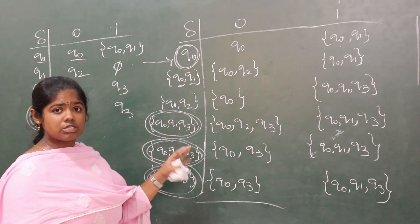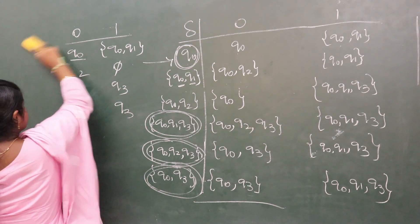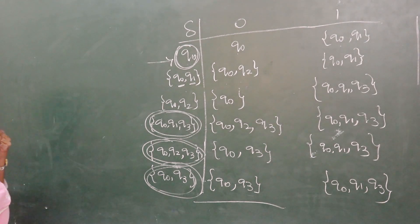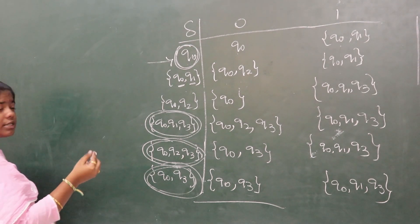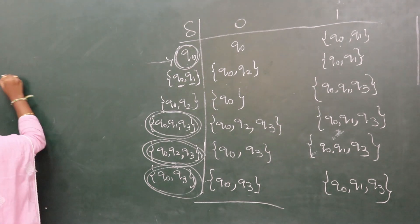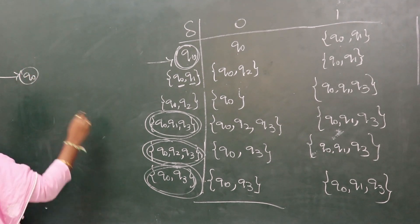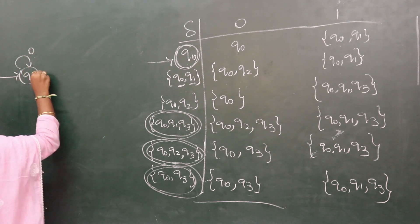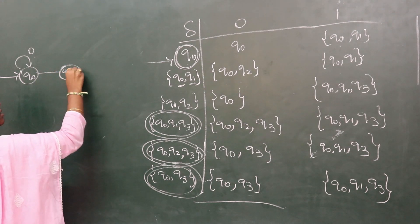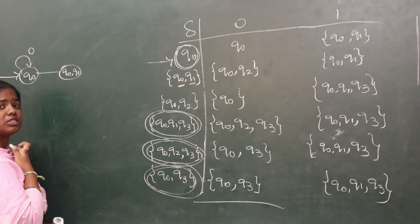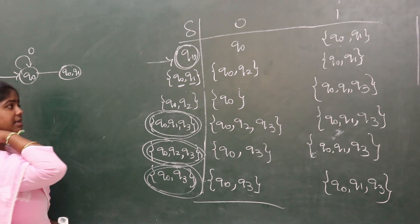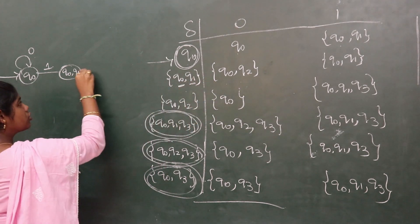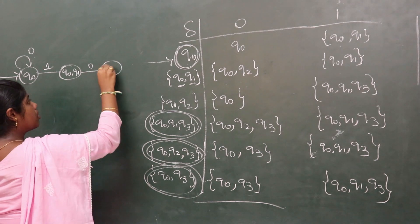Now, using these transitions, we need to construct the DFA. Let the starting state be q0. q0 over 0 goes to q0, q0 over 1 goes to q0, q1, which is a new state. This is the starting state.